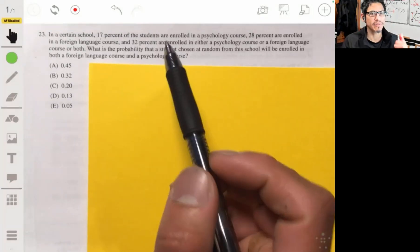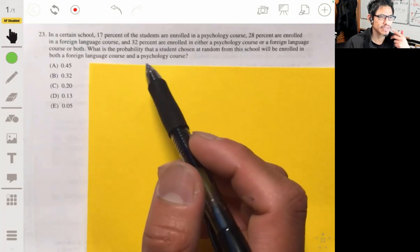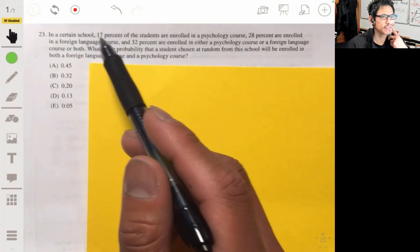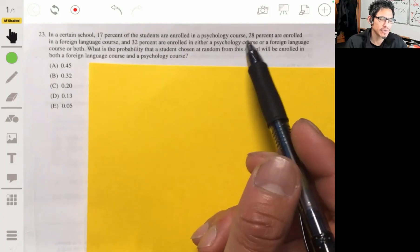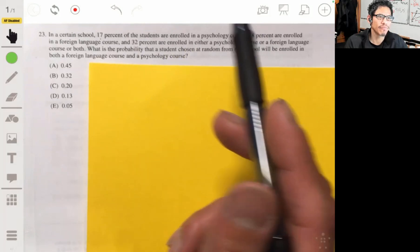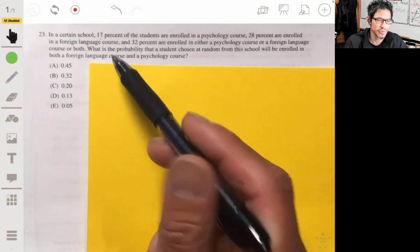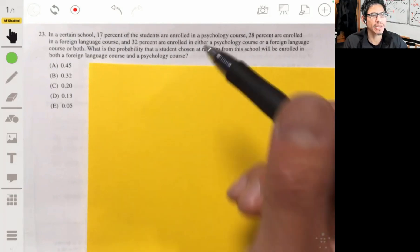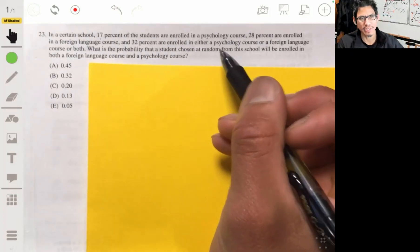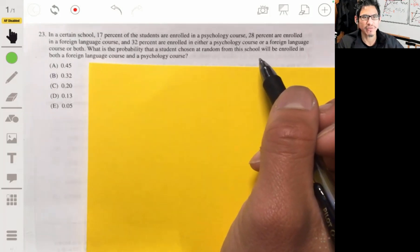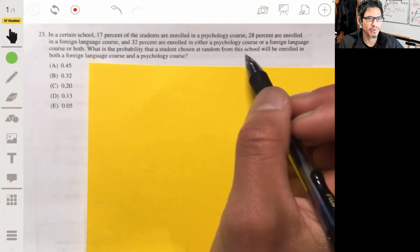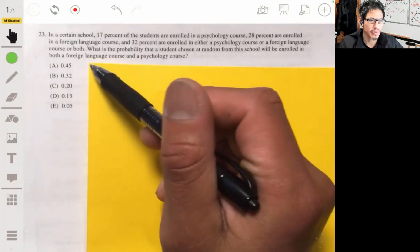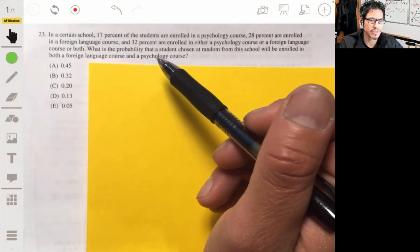Alright, picking up on problem 23 from the 2013 practice exam. We have at a certain school, 17% of the students are enrolled in a psychology course, 28% of the students are enrolled in a foreign language course, and 32% are enrolled in either a psychology course or a foreign language course, or both. What's the probability that a student chosen at random from the school will be enrolled in both a foreign language course and a psychology course?